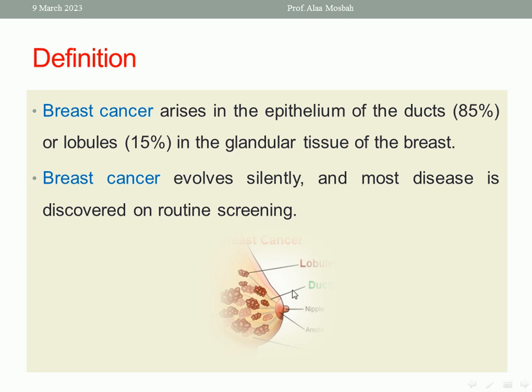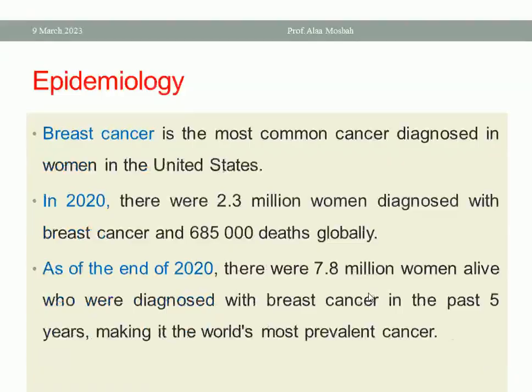As you see in this picture, the duct is affected in 85% and the lobules in 15%. Breast cancer evolves silently and most disease is discovered on routine screening. That is why a screening program for breast cancer is very important.